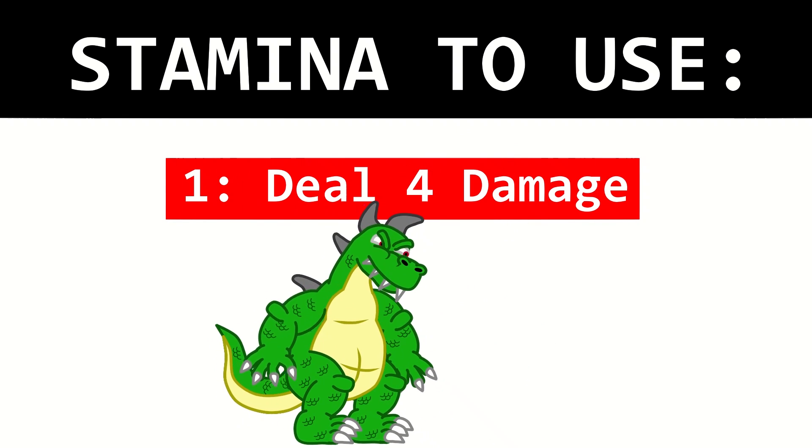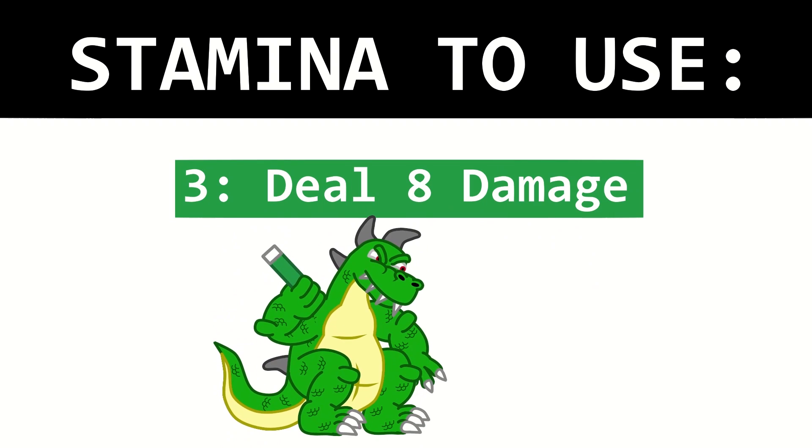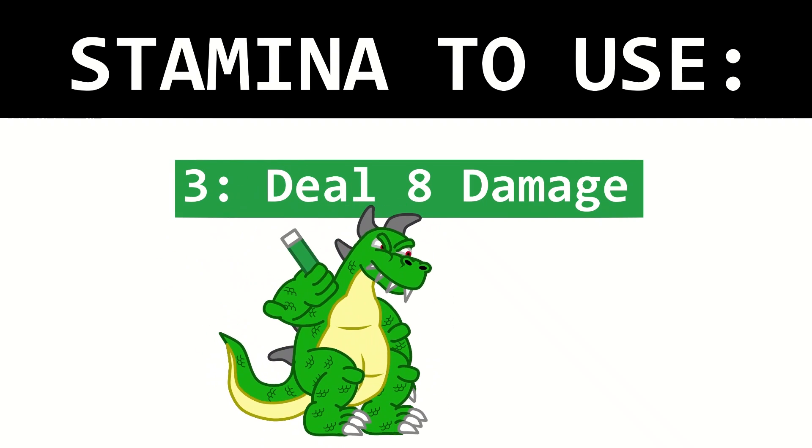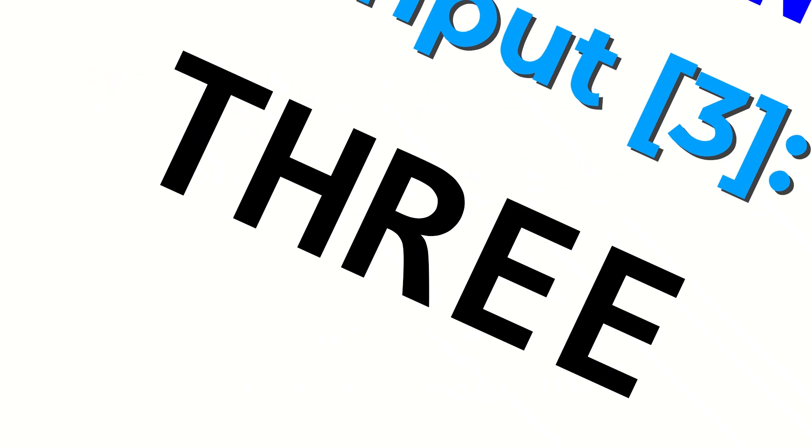On Obfuscate's turn, the player is asked to input a number corresponding to how much stamina they want Obfuscate to use. One stamina will cause Obfuscate to use his simple attack, two stamina will cause him to heal, and three will cause him to use his magic attack. Input in Intercal is received through the write-in command. The user inputs numbers as words, so to input a three, you type "three" — like this.